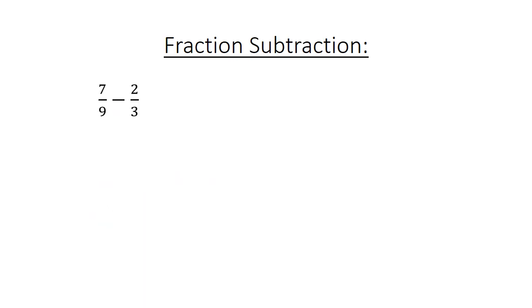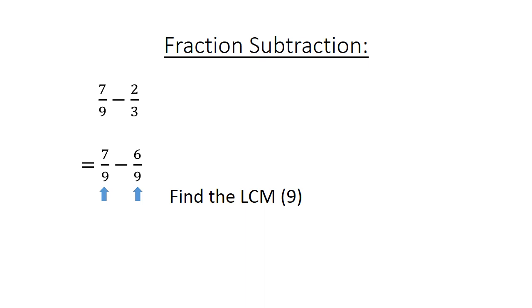Fraction subtraction: 7 over 9 minus 2 over 10. Find the lowest common multiple: 7 over 9 minus 6 over 9 equals 1 over 9.